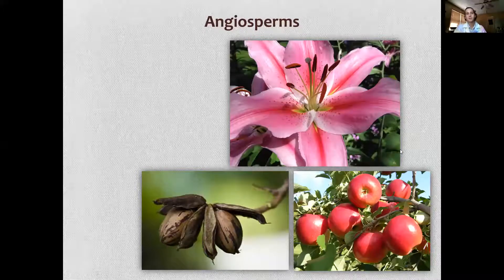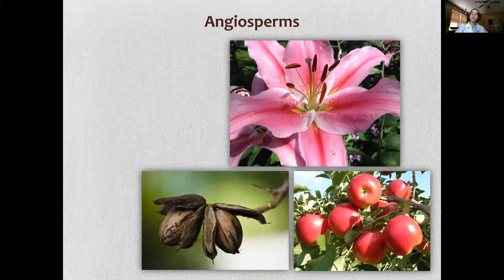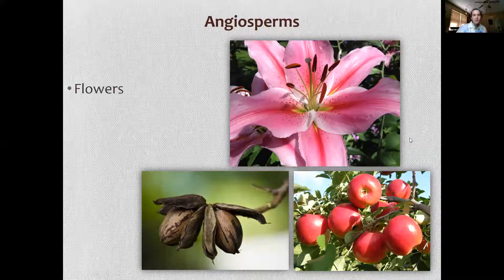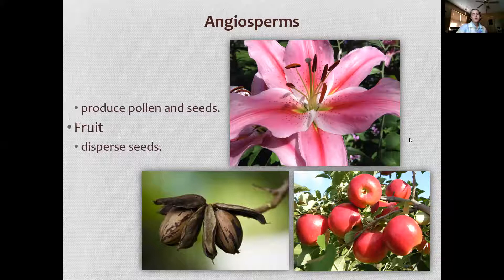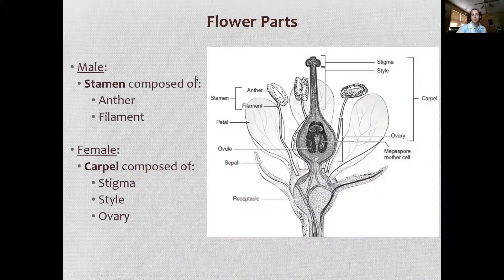So the ones that we like. Angiosperms. They produce flowers, nuts, fruit — basically all the stuff that we really like. They also are responsible for most of the plant diversity on earth.